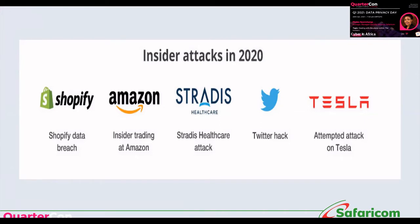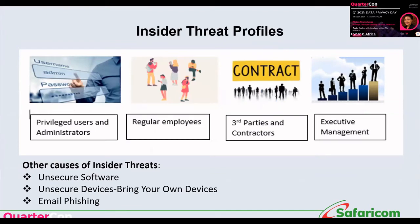There are also positive examples. A Tesla employee rejected a bribe of $1 million to install malware and cooperated with the FBI to help investigate the case. As much as we have insider threats, we also have employees who, because of the culture the organization creates, can be trusted to be honest and transparent and have channels where they can convey this information without being jeopardized. What do you do with whistleblowers when they want to report a foreseen attack or suspicious employee behavior? Do you have channels where they can report anonymously without feeling intimidated?